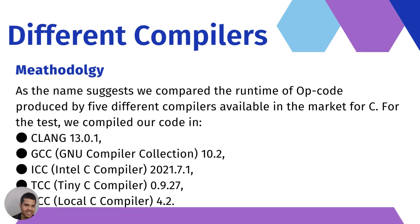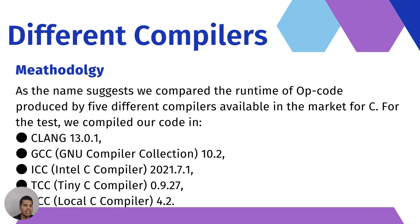For the next test, we compared different compilers: CLANG, GCC, ICC, TCC, and LCC. GCC is the most popular one used for compiling C programs. We also researched additional compilers including CLANG, ICC, TCC, and LCC.